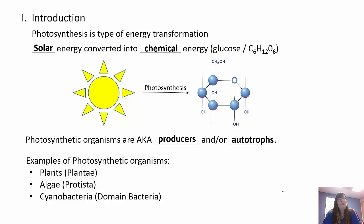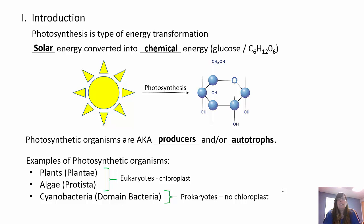Examples of photosynthetic organisms are plants, which are in kingdom Plantae, and algae, which are in kingdom Protista. Both are eukaryotic and have chloroplasts as their organelles. Then there are cyanobacteria, which are in domain Bacteria — those are prokaryotes. Prokaryotic organisms do not have membrane-bound organelles, so they do not have chloroplasts, but they still perform photosynthesis, which is a very important distinction.